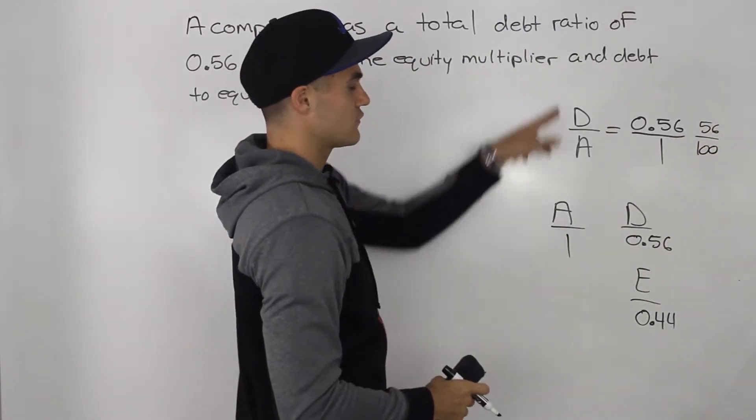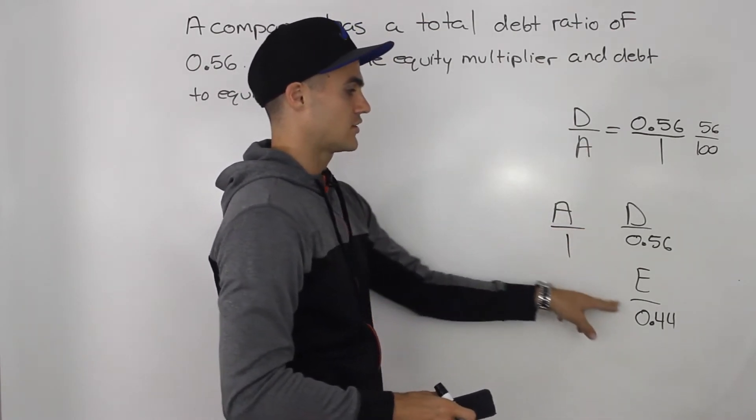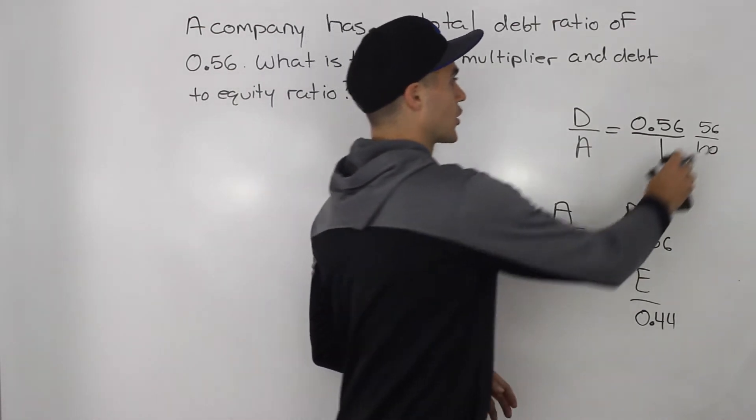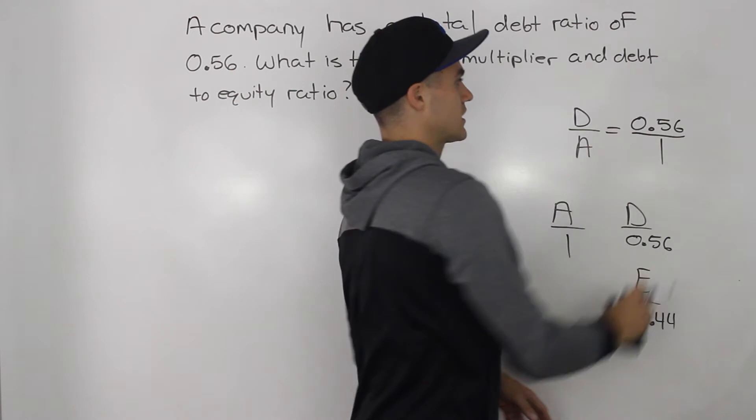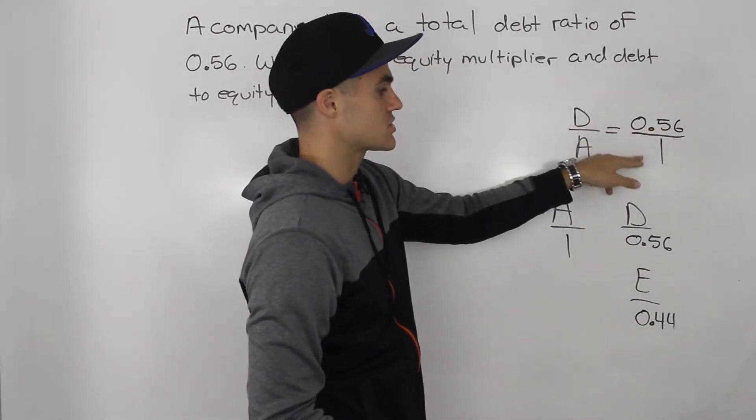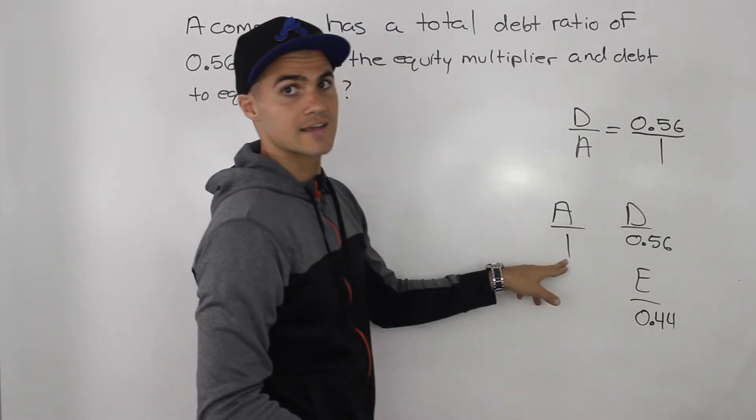Okay, and then you can have your debt as 56, your assets would be 100, and then your equity would be 44. But either way works, I think it's just easier to keep the values that they give you. And if they give you a single value like this, just put it over 1, and then make the mini balance sheet as is.